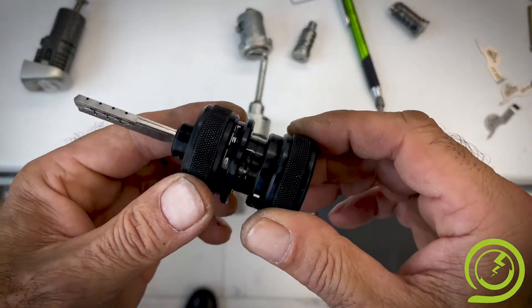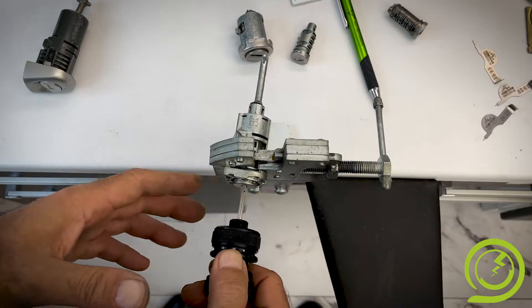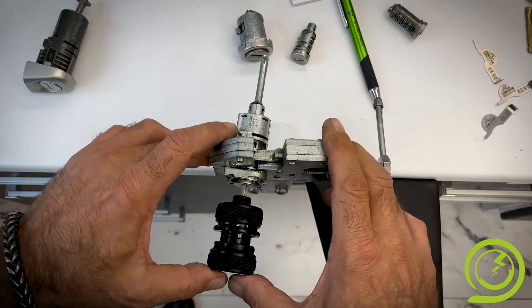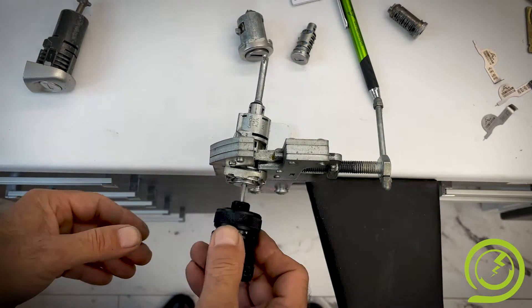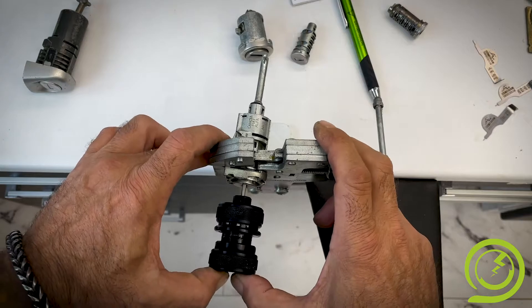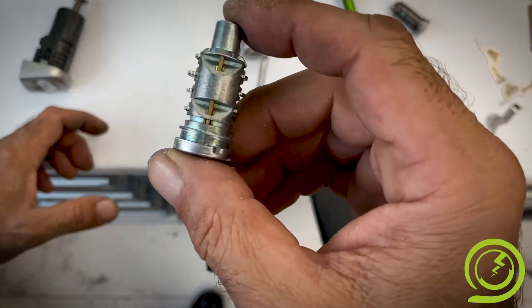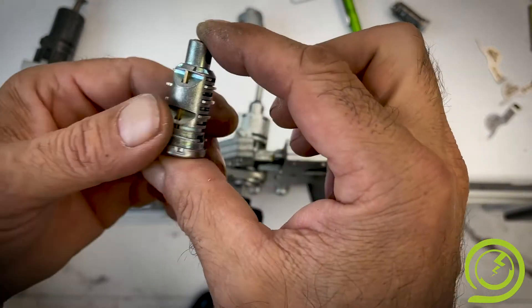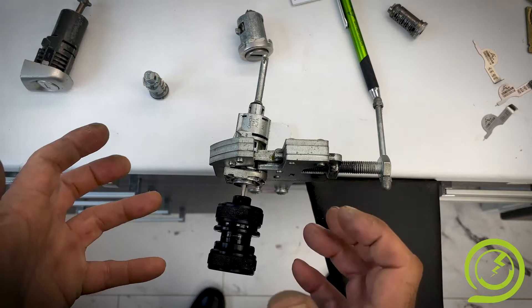So let's check the lock. Turn right, push to the front, inject. Check, nothing moves. On the other side, nothing moves. This is a 7-disc cylinder inside, three on one side and four on the other.